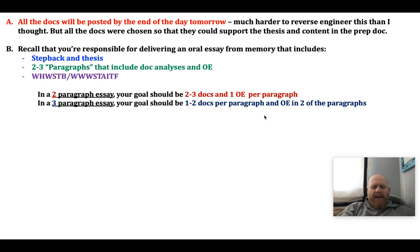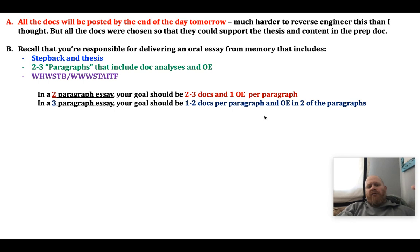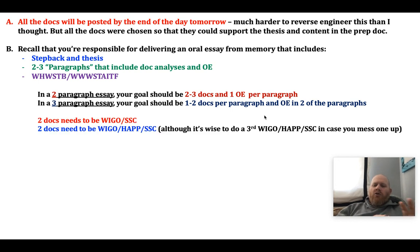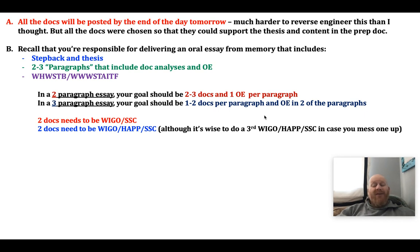If you look at how the prep is done, it guides you on whether it's more two or three paragraphs. Your goal should be two to three docs per paragraph and one outside evidence per paragraph for a two-paragraph essay. For a three-paragraph essay, it should be one to two docs per paragraph and OE in two of the three paragraphs. Two of your docs need to be WEGO SSC — connect back to the claim thesis — and two additional docs need to be WEGO HAP SSC, although I recommend doing a third of those to cover all five docs, just in case you mess one up.